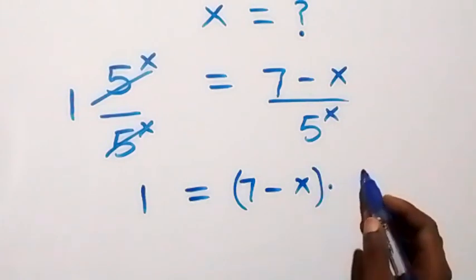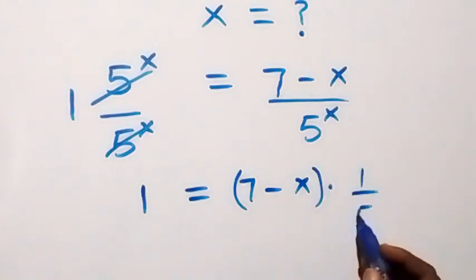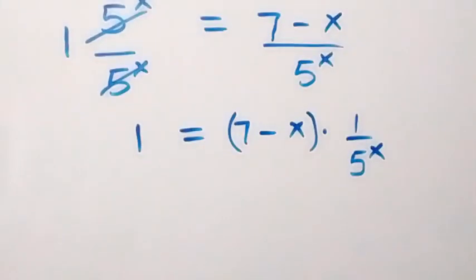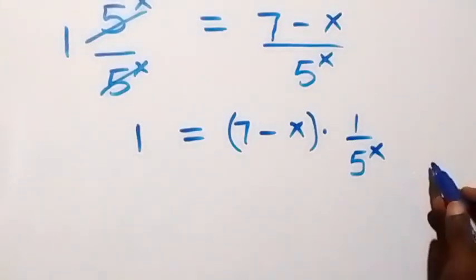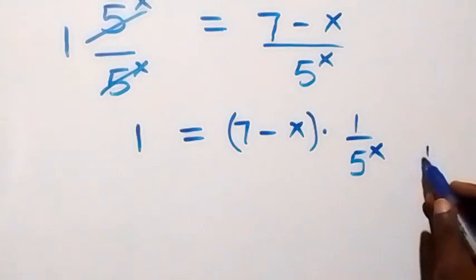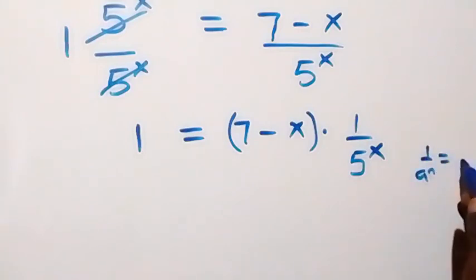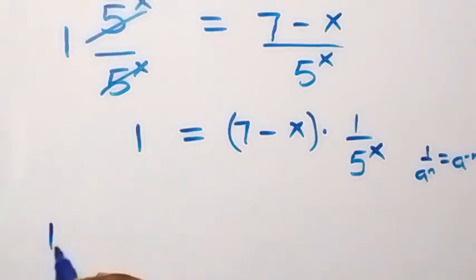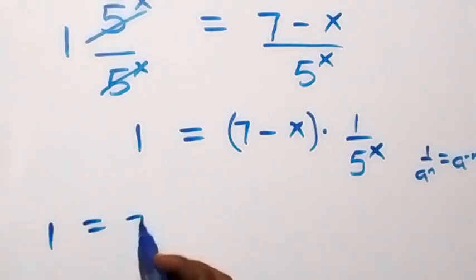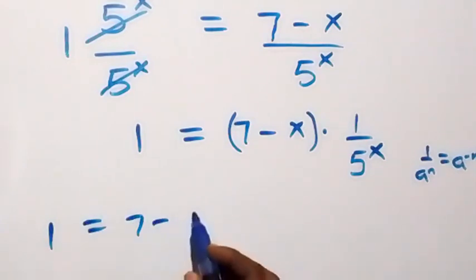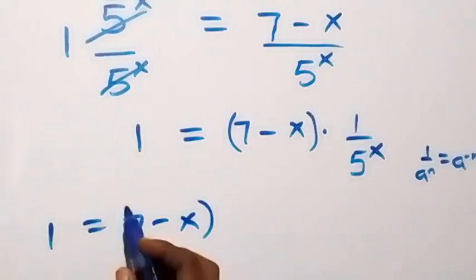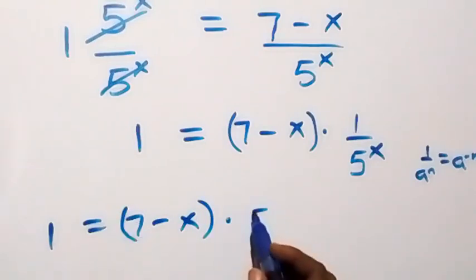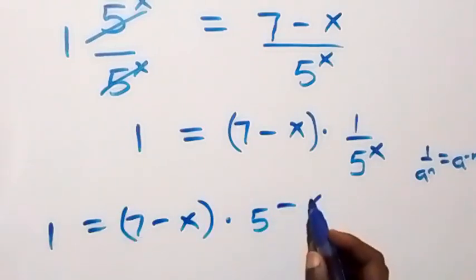We can write this as times 1 over 5 raised to power x. Applying the law of indices: 1 over a raised to power n is the same as a raised to power minus n. So here we have 1 equals 7 minus x, times 5 raised to power minus x.